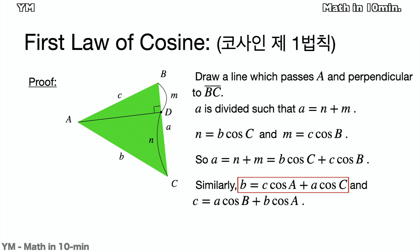Similarly, B equals C times cosine A plus A times cosine C, and C equals A times cosine B plus B times cosine A.